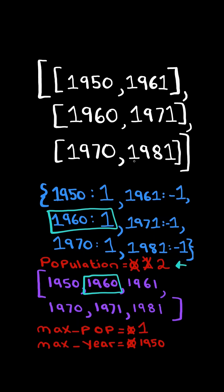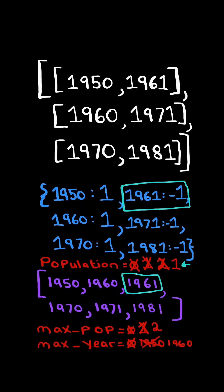We continue iterating. We add to the population, and since it's greater, we update max population and max year. We continue. We subtract 1 from population, and it's not greater than max population, so we do not update.